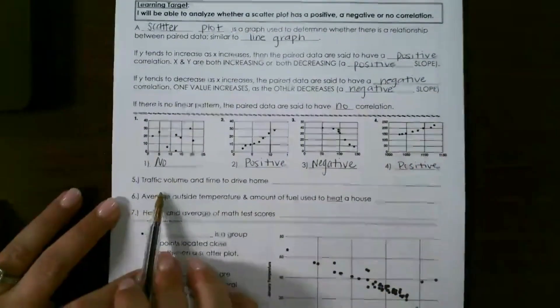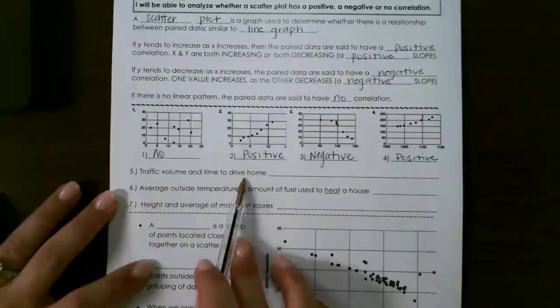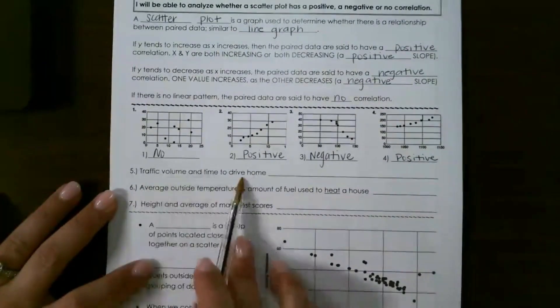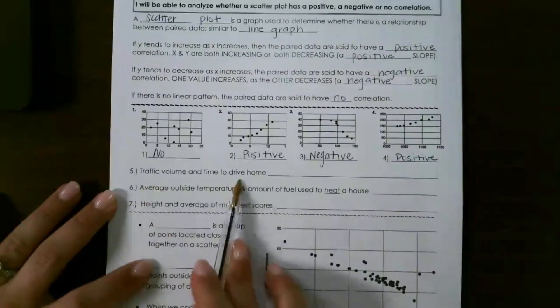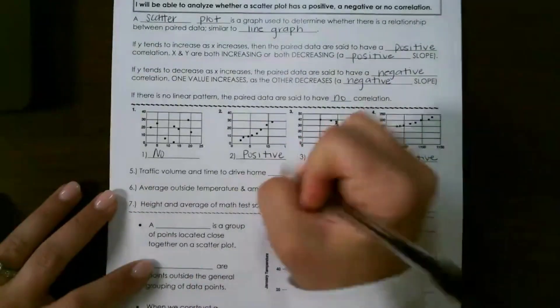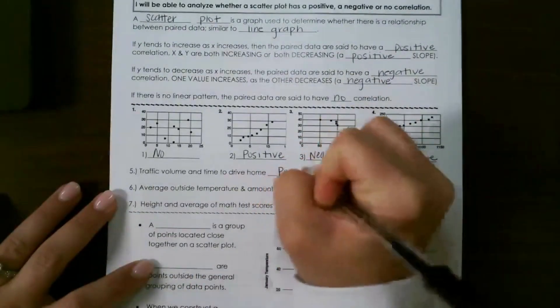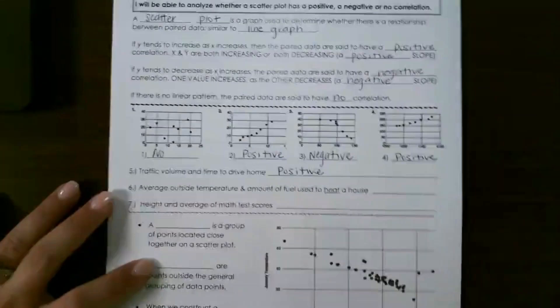So let's look at these situations. Traffic volume and time to drive home. The more traffic I have, the longer it's going to take me to drive home, and the less traffic I have, the shorter it's going to take me. So that's going to be a positive correlation because they are both increasing or decreasing.